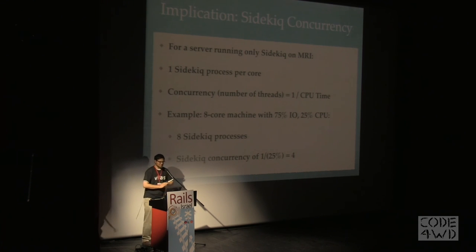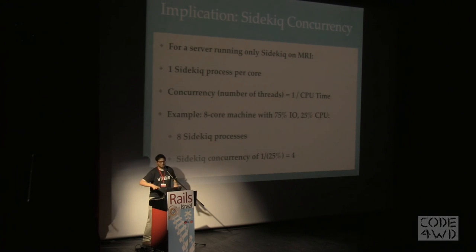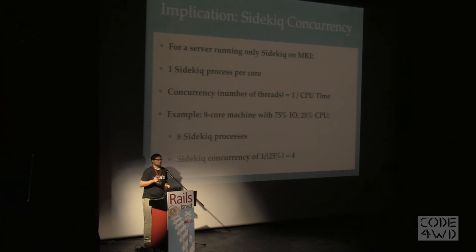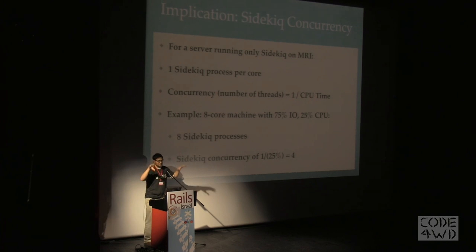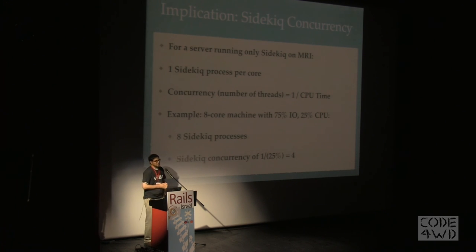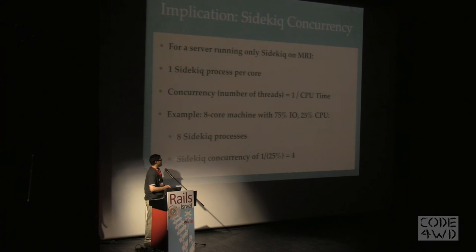One implication of this is Sidekiq concurrency. A lot of people mess this up. If you have a server running only Sidekiq with no other processes, using MRI, you want one Sidekiq process per core. If you have a machine with eight cores and you're running only one Sidekiq process with a lot of concurrency, you're basically wasting seven cores — don't do that. One process per core; eight processes means eight busy cores. The rule for concurrency — how many threads per Sidekiq process — should be one divided by CPU time. For example, if a quarter of your background job is CPU and three quarters are IO, your Sidekiq concurrency should be four. People set this way too high. Keep it low, think about that ratio, figure out the IO-to-CPU relationship, flip it, and that's your concurrency.